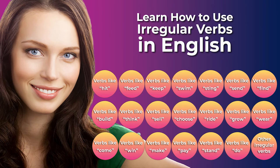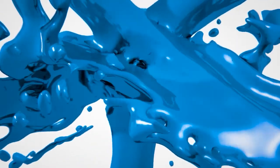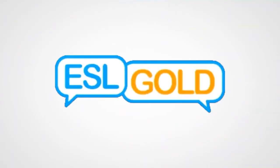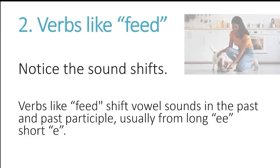These 21 short videos will help you quickly see and understand the relationships and patterns between various types of irregular verbs so that you can use them properly. Number two is verbs like feed. You'll need to notice the sound shifts in the past and the past participle. Verbs like feed shift vowel sounds in the past and the past participle, usually from long e to short e.